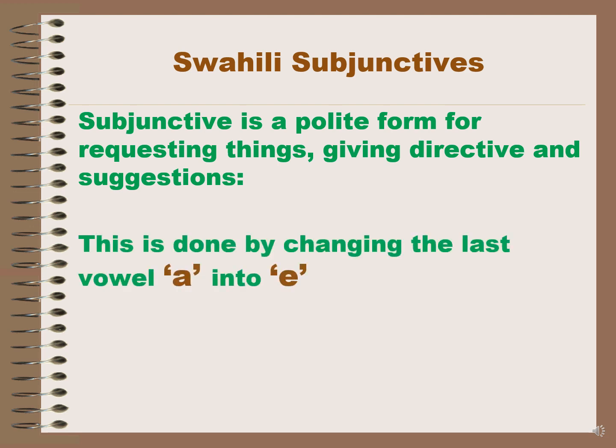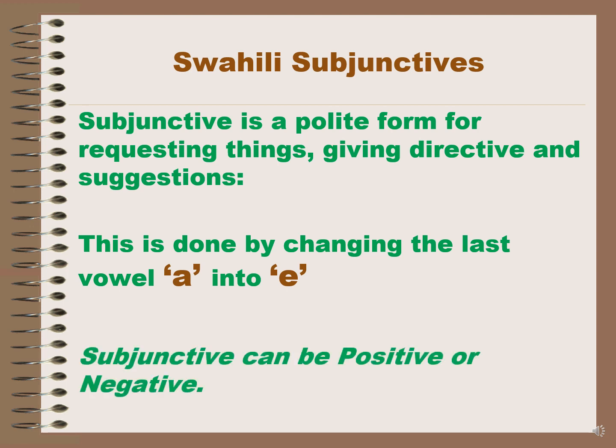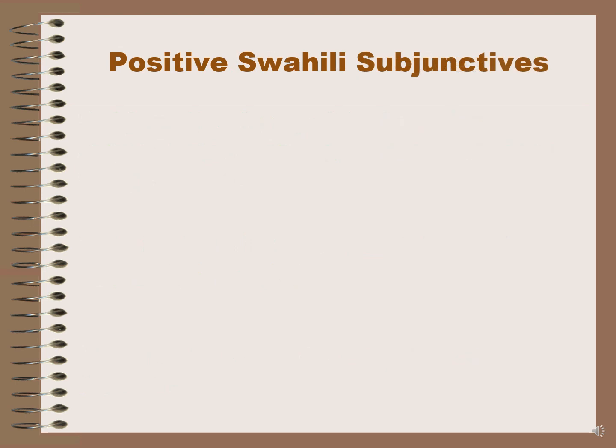This is done by changing the last vowel 'a' into 'e'. In Swahili, it is said from vowel 'a' to vowel 'e'. The subjunctive can be positive or negative. Swahili subjunctives can be used as follows in sentences.